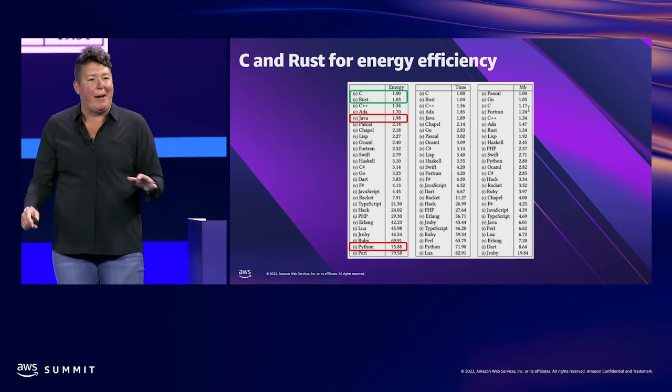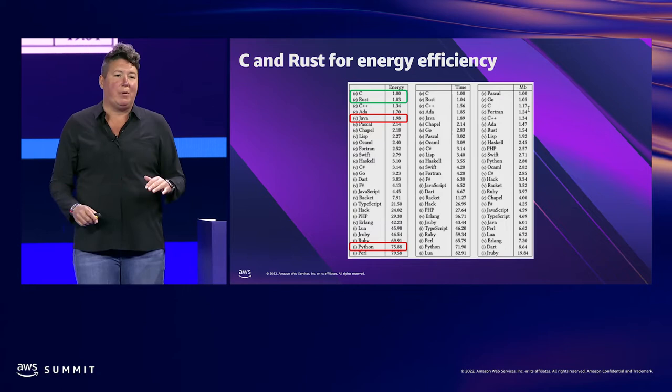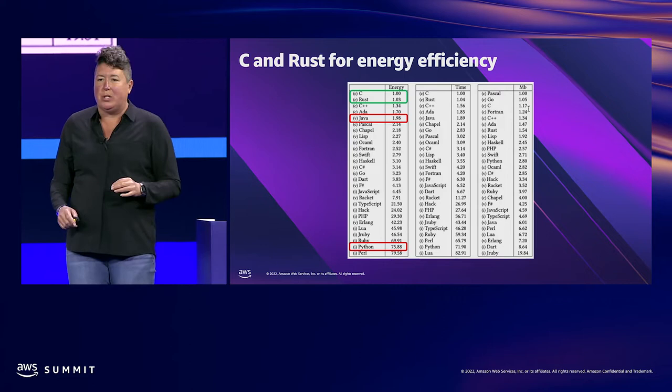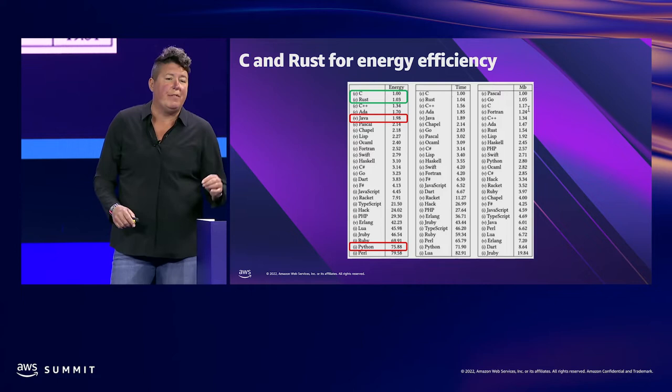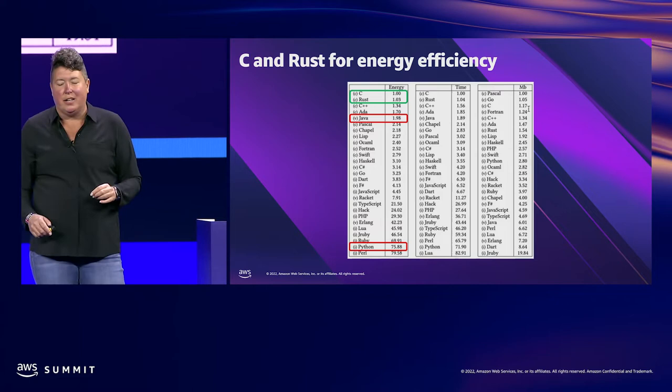It doesn't surprise anybody that C and Rust are more energy efficient than other languages. But what is a surprise is the magnitude of the difference. We could reduce the energy consumption of our compute, even by conservative estimates, by 50% with broad adoption of C and Rust.